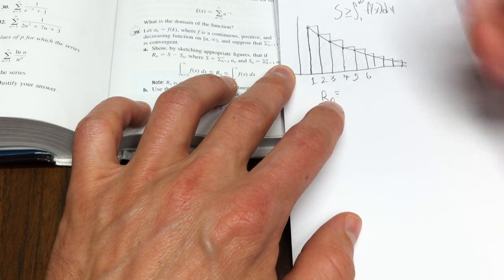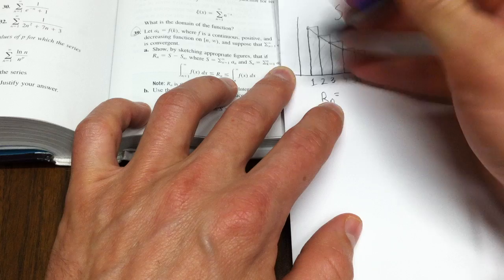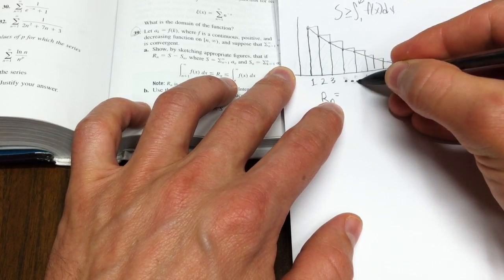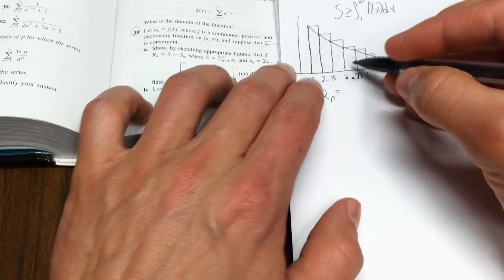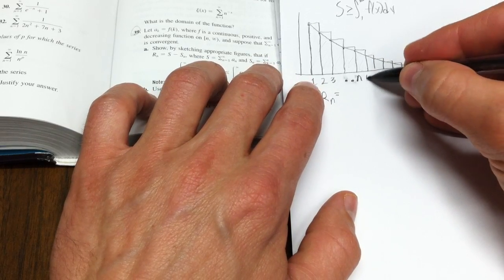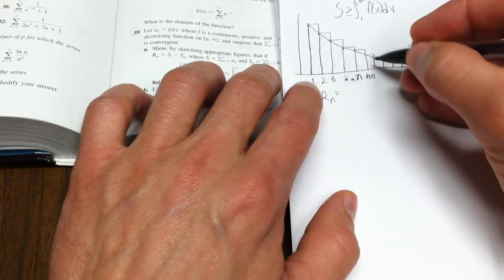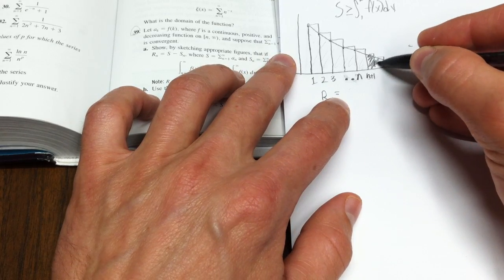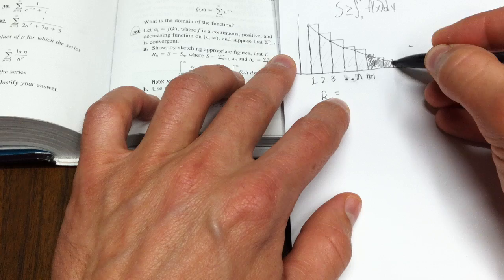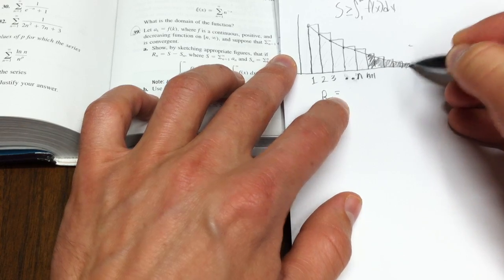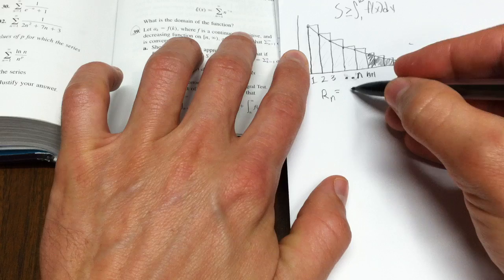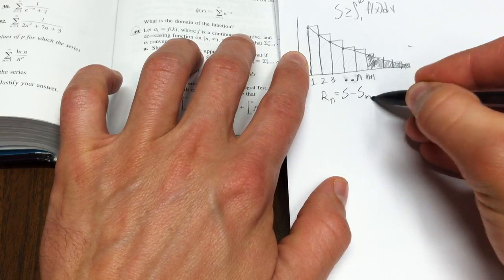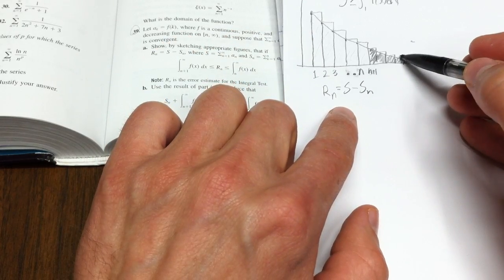So Sn goes up to N plus 1, that error. Well, Rn is really this piece over here, because it's the whole series minus Sn. So what could you say about this piece?